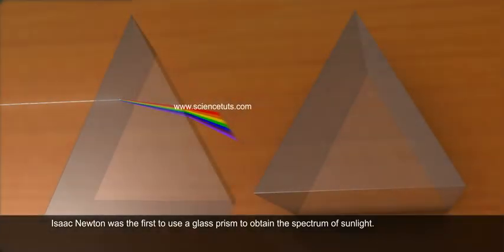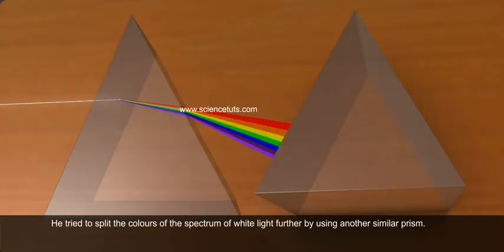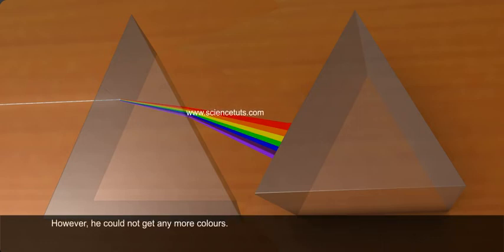Isaac Newton was the first to use a glass prism to obtain the spectrum of sunlight. He tried to split the colours of the spectrum of white light further by using another similar prism. However, he could not get any more colours.